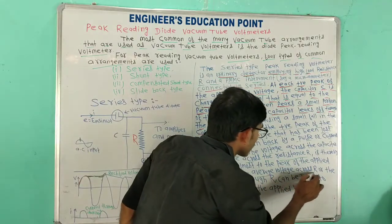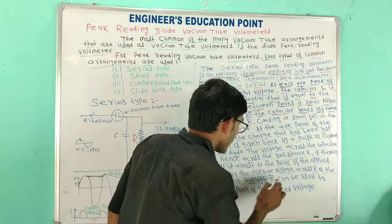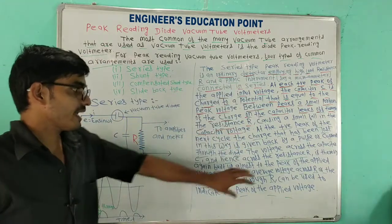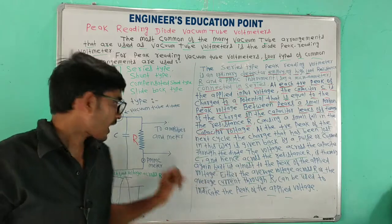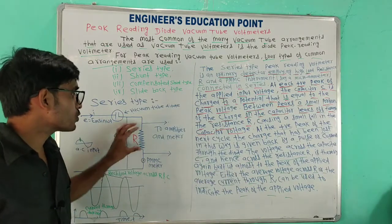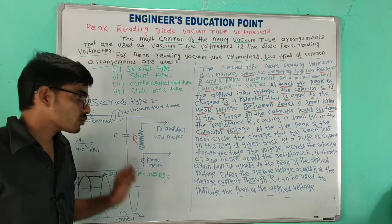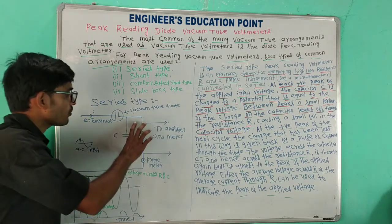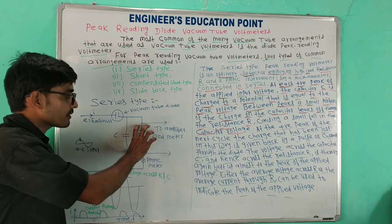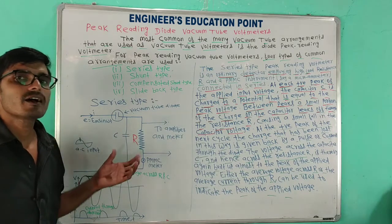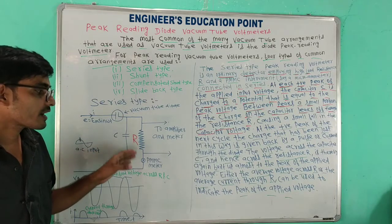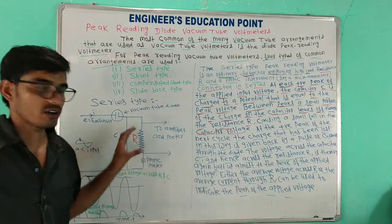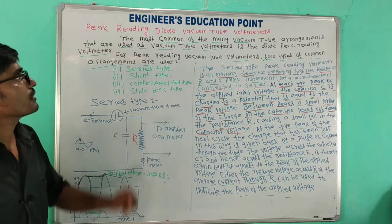The average current through R, or the average voltage across R, can be used to indicate the peak of the applied voltage. Either the average voltage across R or the average current through R allows us to determine whether the peak applied voltage has been reached.